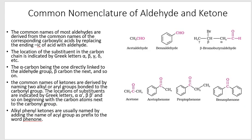For common nomenclature of aldehydes, we take the name of the related carboxylic acid and replace the suffix '-ic acid' with '-aldehyde'. For example, acetic acid gives acetaldehyde for the two-carbon aldehyde. Benzoic acid is C6H5COOH, so the corresponding aldehyde is benzaldehyde. Similarly, butyric acid gives butyraldehyde.